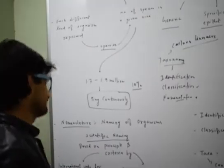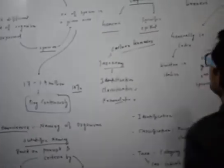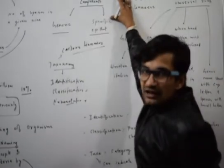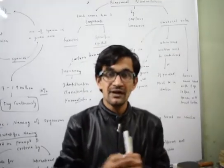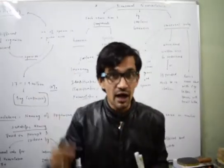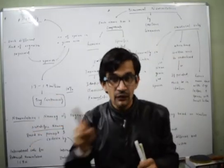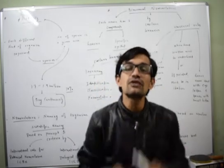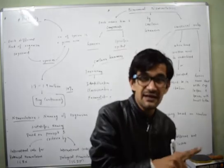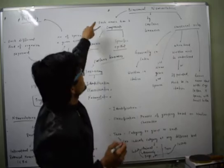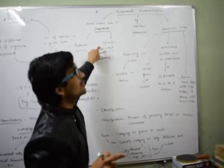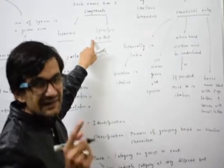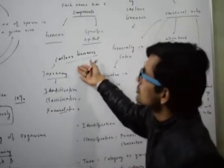Now let's move to binomial nomenclature. Binomial nomenclature means each and every living organism is given two names — like in the Indian system, a person has a first name and a second name. The first part is called the generic name or genus name, and the second part is called the specific epithet, which is the name of the species. This nomenclature was also given by Carolus Linnaeus.